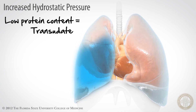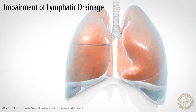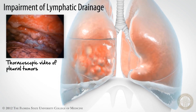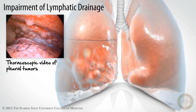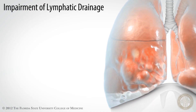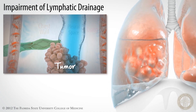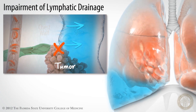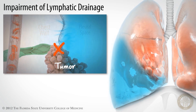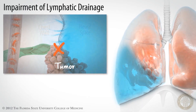Another example is when there's a tumor in the lung or chest wall — that's another mechanism of pathologic formation of pleural effusions. Pleural effusion can form as a result of impairment of the lymphatic drainage. A tumor in the lung or in the chest wall can mechanically obstruct the thoracic lymphatics, causing pleural fluid accumulation by decreasing the rate of absorption of pleural fluid that normally occurs.